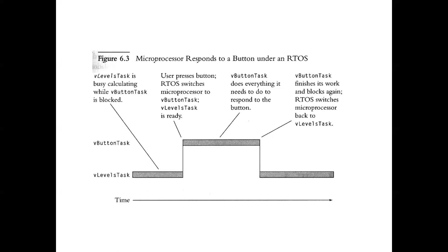The fee level task has low priority, and the fee button task has high priority. My first question is: whenever you switch on your embedded system, out of these two tasks — the level task which is low priority and the button task which is high priority — which task will be executed first by the microcontroller? Higher priority or lower priority?